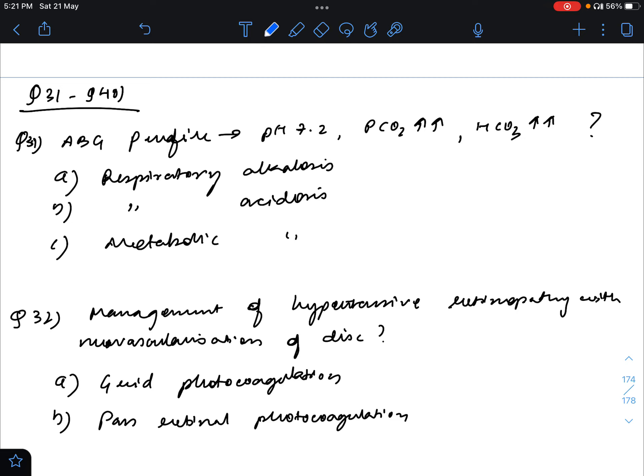There was an ABG profile given. pH was mentioned 7.2, so it was acidosis. pCO2 was raised and bicarbonate was also raised. If bicarbonate is raised it will pertain to alkalosis, but pCO2 was raised so it will be respiratory acidosis for this answer.